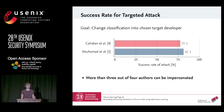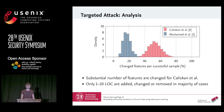In the targeted scenario, where we want to impersonate another developer, we can impersonate three or four developers for both methods. The approach by Abu Hamad et al. is slightly easier to fool since it relies only on lexical features, such as typedef declarations and so on, which can be manipulated a little more easily.